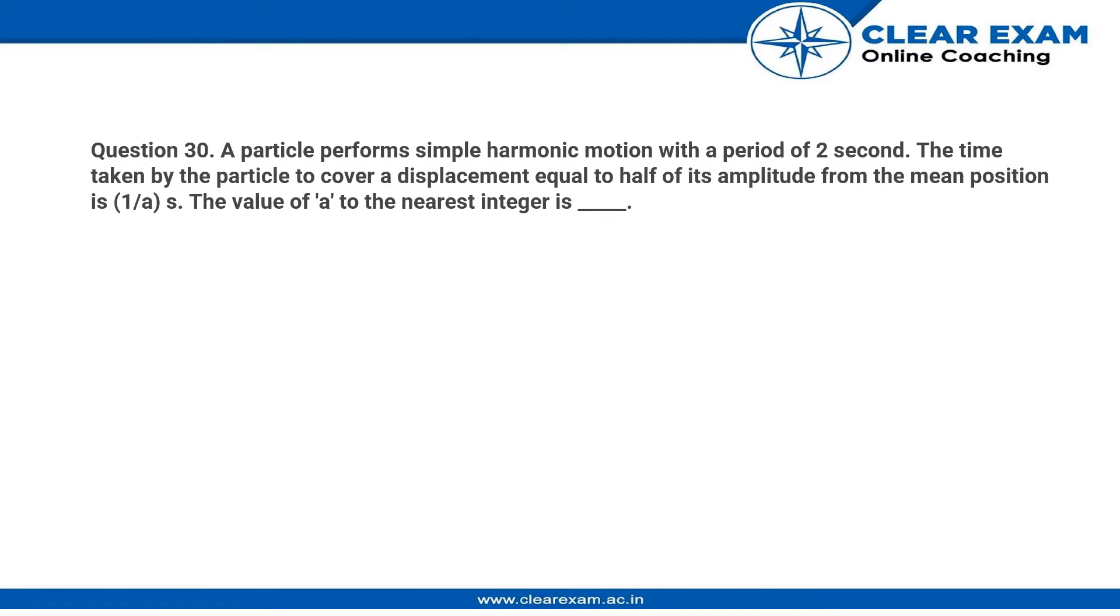Hello students, here is the question. A particle performs simple harmonic motion with a period of 2 seconds. The time taken by the particle to cover a displacement equal to half its amplitude from the mean position is 1 by a, and the value of a is what we need to find. A is the amplitude in this case.